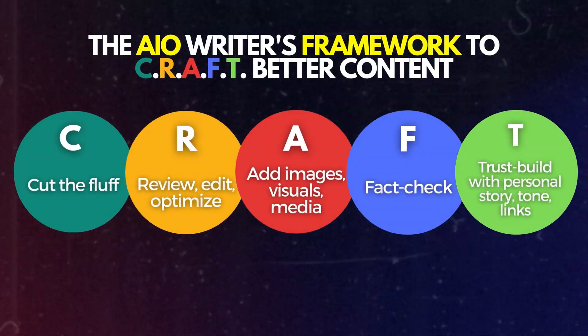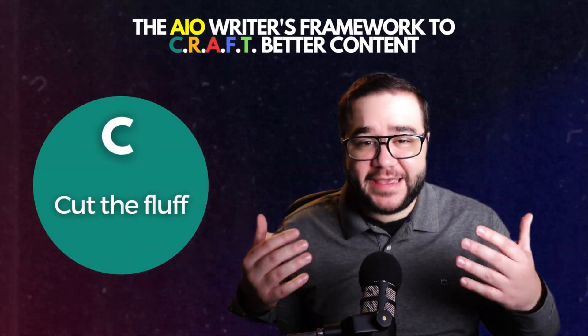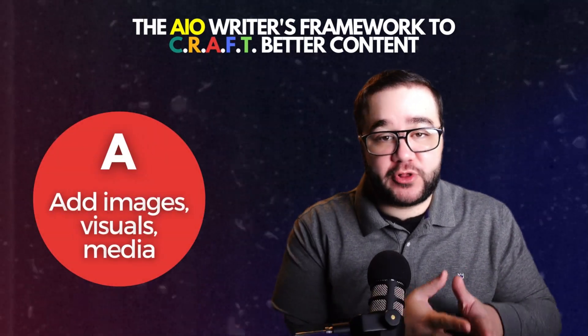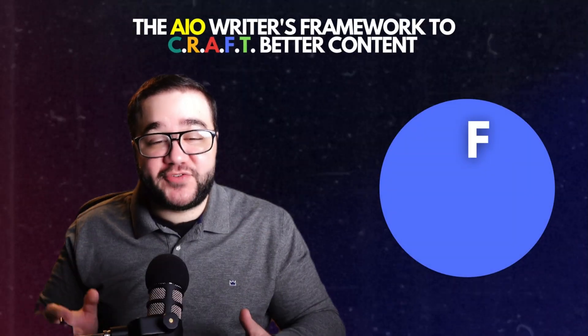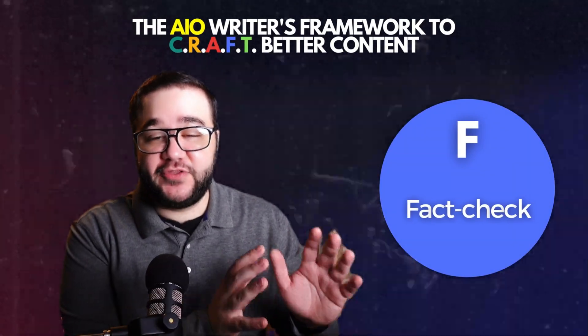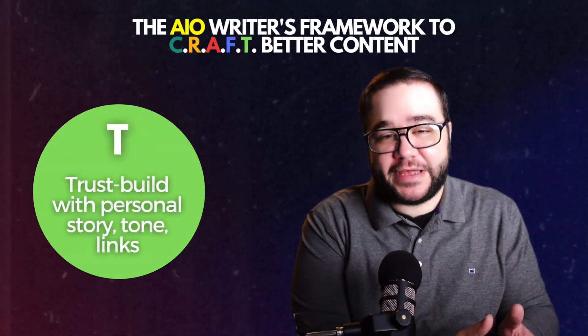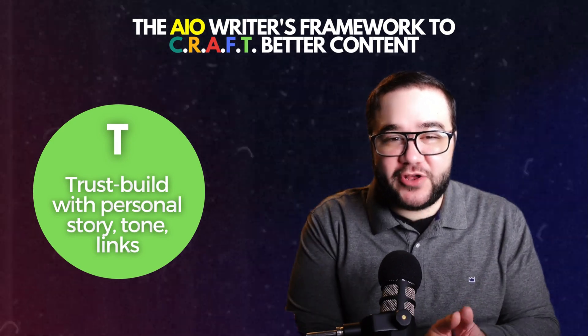However, we always advocate that you follow our CRAFT formula to make AI articles more your own. That's going to be things like cutting the fluff and removing unnecessary words or bodies of text that don't line up with your overall message and theme. The next thing is to review, edit, and optimize that content, and add in any visuals or key pieces of media. After that, fact check — make sure any fact made within the article is accurate, because it's your brand and reputation on the line. And lastly, trust build by crafting a story that resonates with your reader, editing your tone, and adding in links for extra trust.